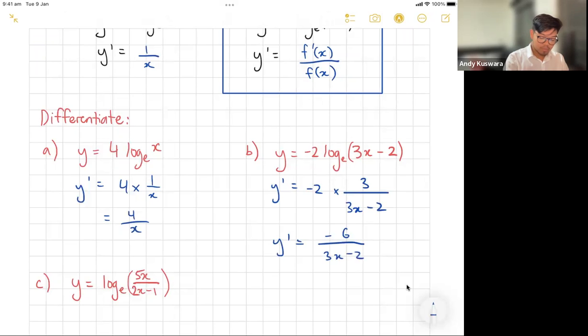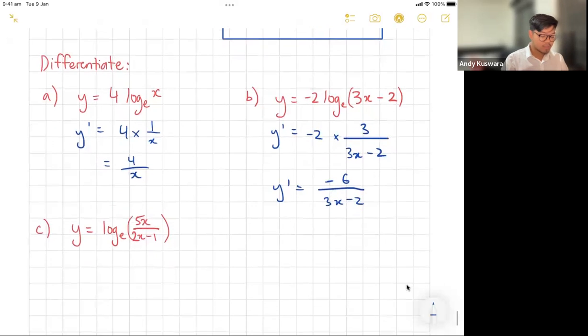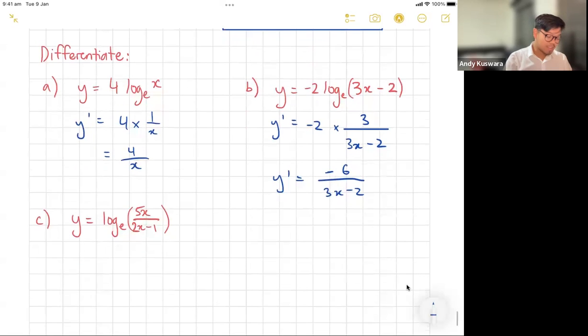And this last one here, this one's going to be a slightly trickier one. Now what I don't want you to do is I don't want you to use the quotient rule to find the derivative of 5x over 2x - 1. What I want you to do is write it as, this is y not y dash, I'm just going to rewrite it.